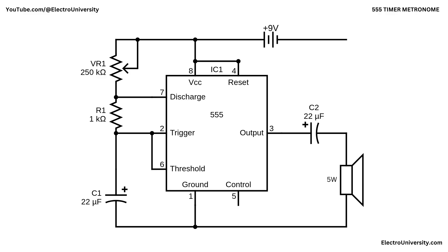The oscillation frequency is set mainly by VR1 and C1. Turning VR1 to a higher resistance lengthens the charge time and slows the beat, while turning it lower speeds the beat. R1 provides a minimum series resistance, so the discharge transistor isn't overstressed at very low VR1 settings, and it also defines the minimum period.